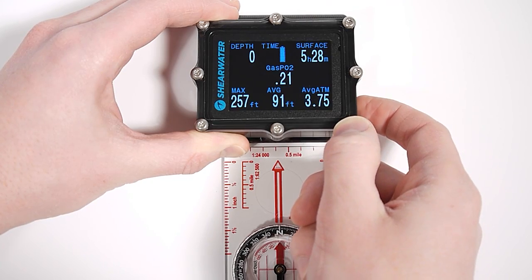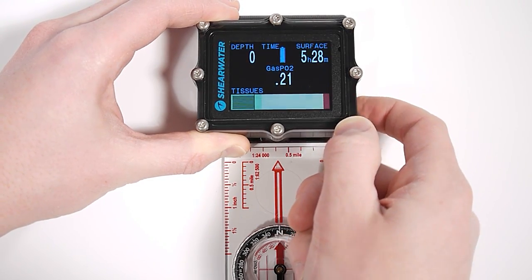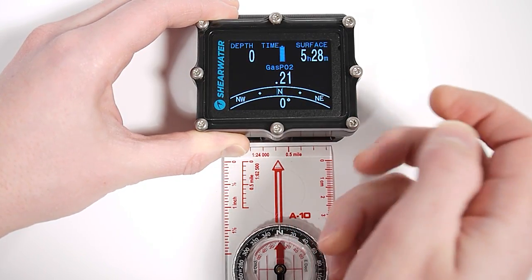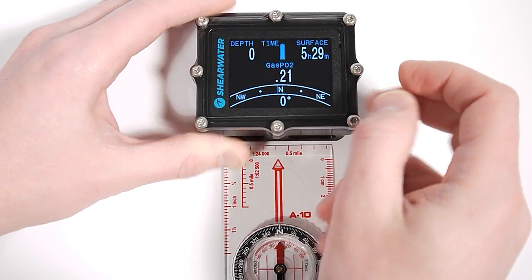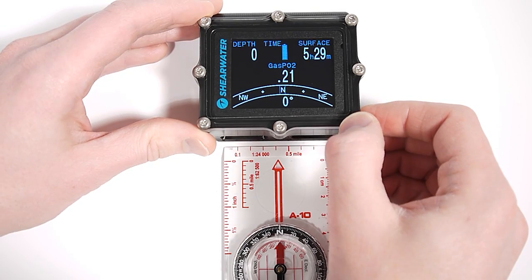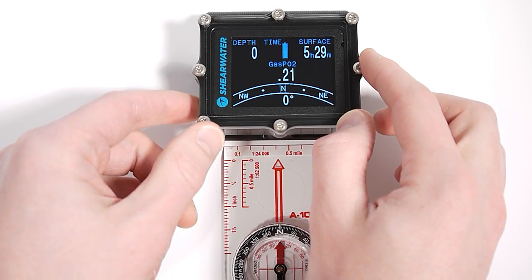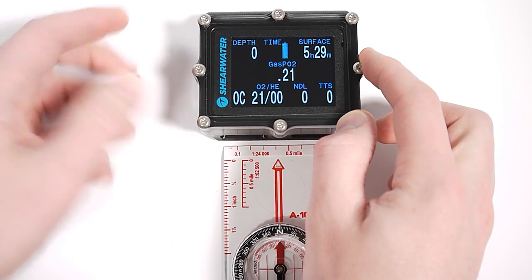You can then continue on to the other information screens until you get back to the main screen. Unlike the other information screens, the compass isn't going to time out after 10 seconds. It's going to stay there so you can navigate. To quickly get off the compass, just press the left button and you'll be back at the main screen.